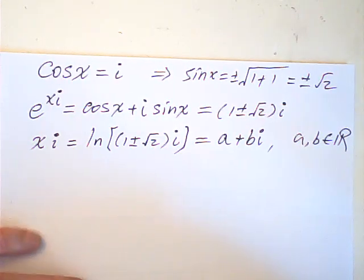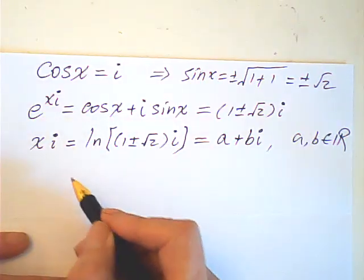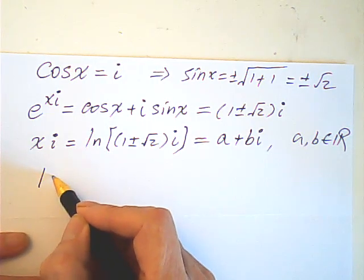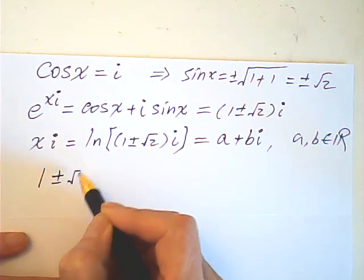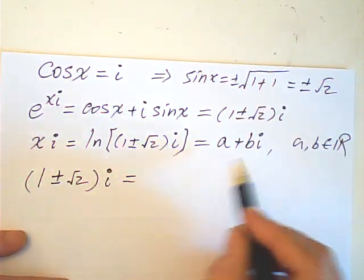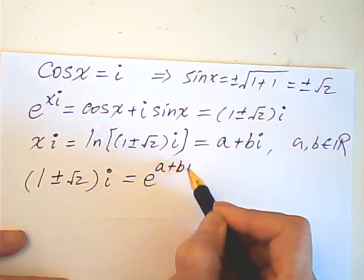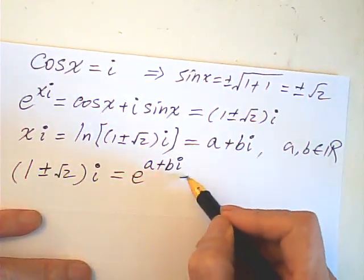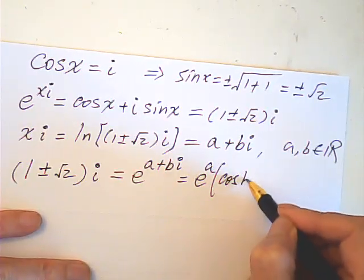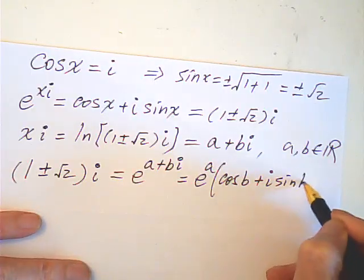Okay, good. And from this, we know that 1 plus or minus root 2 i is equal to e to the power of a plus bi, which is equal to e to the power of a times cosine b plus i sine b, right?